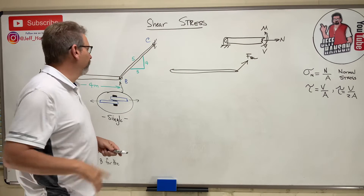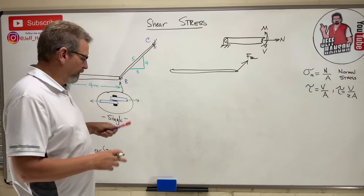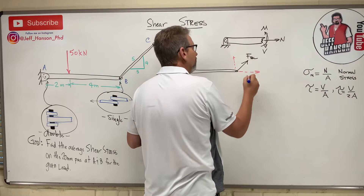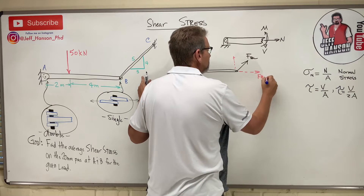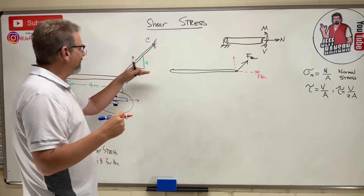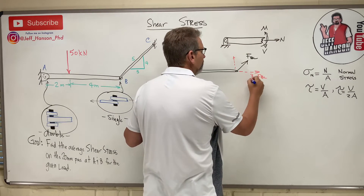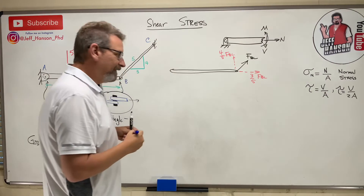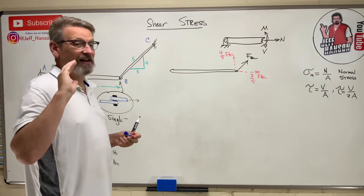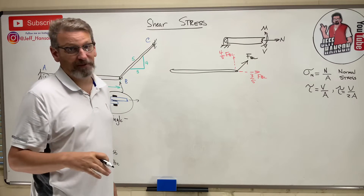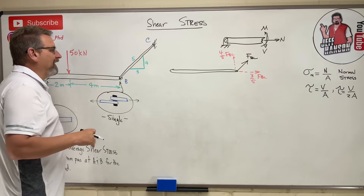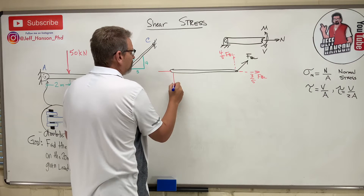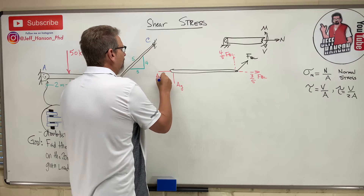FBC has two components — it's a 3-4-5 triangle, so the x-component is FBC times 3/5 and the y-component is FBC times 4/5. In solids you're expected to know this automatically. Point A is a pin connection so it has Ay and Ax. In statics I don't care whether it's double or single shear — it's just a pin with Ay and Ax.